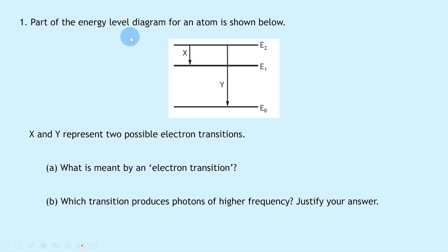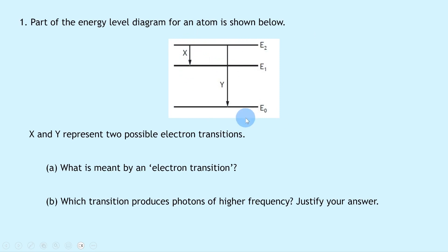So let's get going. Question one says: part of the energy level diagram for an atom is shown below. X and Y represent two possible electron transitions. We have energy levels E0, E1, and E2, and two transitions shown by X and Y. X shows an electron going from E2 to E1, and Y shows an electron going from E2 to E0.